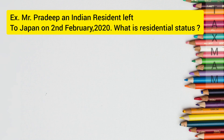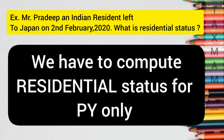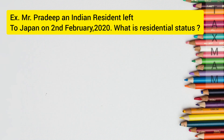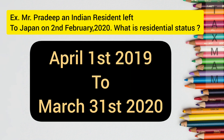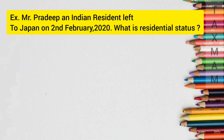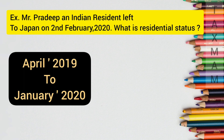Let's understand the basic condition with the help of an example. Mr. Pradip Kumar, a citizen of India, left to Japan on 2nd February 2020. They are asking: what is the residential status of Mr. Pradip for the assessment year 2020 to 2021? Remember, we have to compute the residential status for the previous year only, not the assessment year. So the previous year is 2019 to 2020, meaning we calculate how many days Pradip was in India from April 1st 2019 to March 31st 2020.